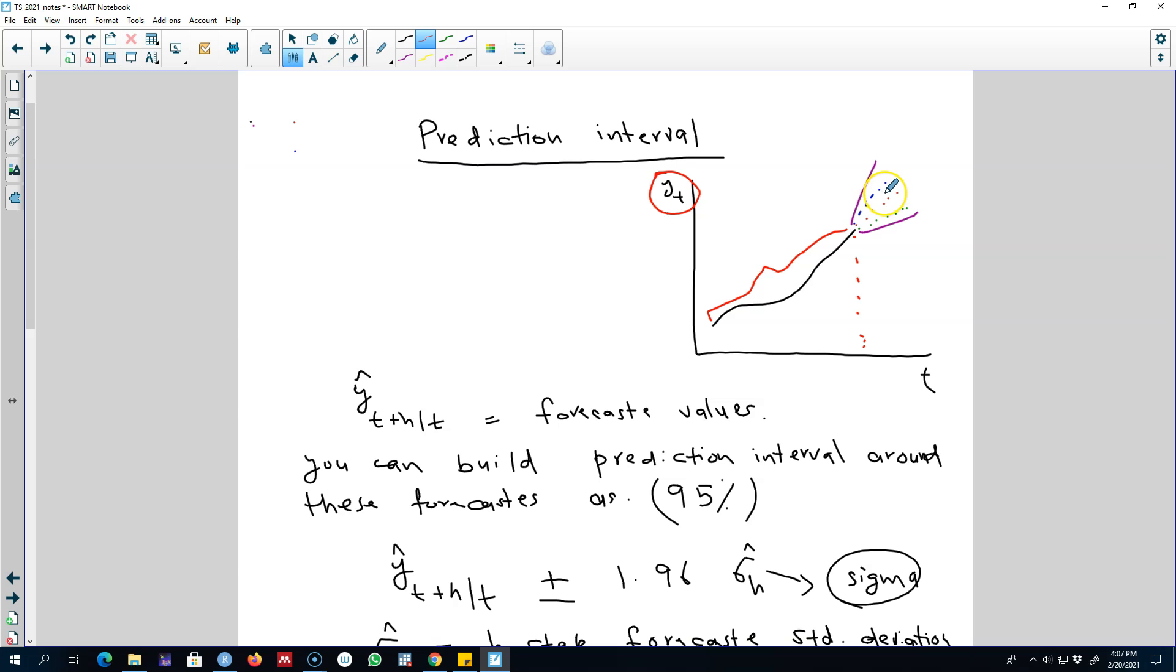We may have various futures for this series. So what we can do is, instead of forecasting a particular value of the series, we calculate an interval of values, for example this purple interval, and we say that we are this much confident that our forecast value will be within this boundary.